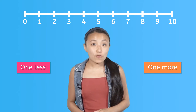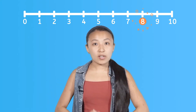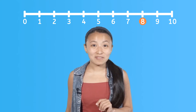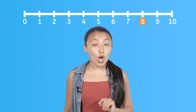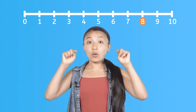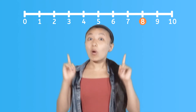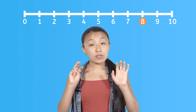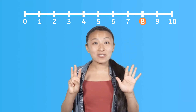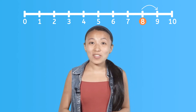Let's try counting to solve a few practice problems together. Here's our first problem: what number is one more than eight? We know that when we count up, each number is one more than the number before. So let's count up from eight. What number comes right after eight when we count? Nine. You can see on the number line that nine is one more than eight.